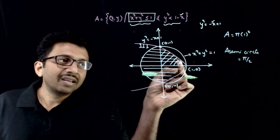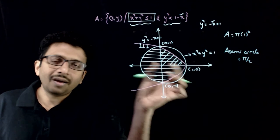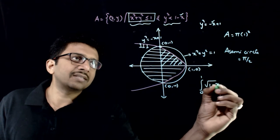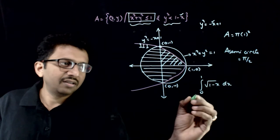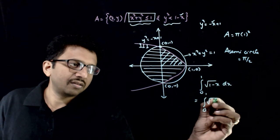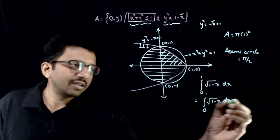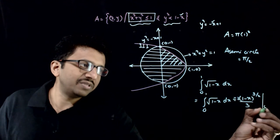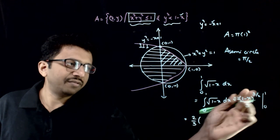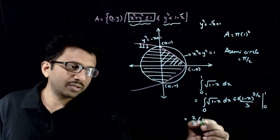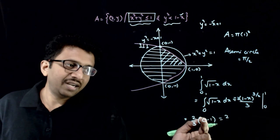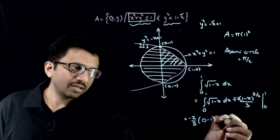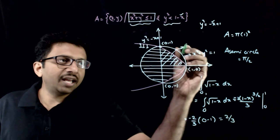Now let us find the segment area, which is the area between the x-axis and the parabola curve between x = 0 and x = 1. That is the integral from 0 to 1 of √(1 − x) dx. Integrating: (1 − x)^(3/2) divided by (3/2), with a minus sign, evaluated from 0 to 1. That equals (2/3) times [0 − (−1)], giving minus (2/3)(0 − 1) = 2/3. So this shaded area is 2/3 square units.